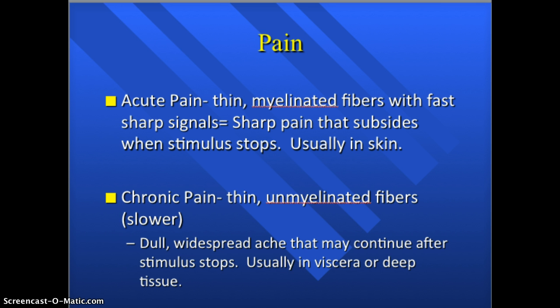There are two types of pain. Acute pain involves thin myelinated fibers (axons) and sends very fast, sharp signals, responsible for sharp pain. It typically stops when the stimulus stops and is found mainly in your skin. Chronic pain involves thin unmyelinated axons that send impulses much more slowly, producing a dull ache. It typically doesn't stop after the stimulus stops, and it's very difficult to pinpoint where that pain is coming from.